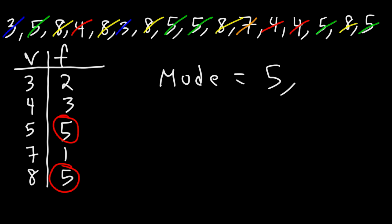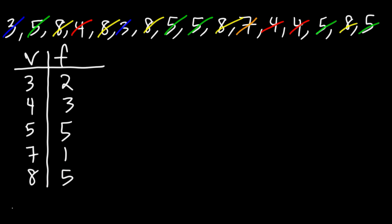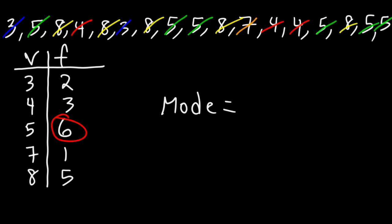Now let's say if we introduce another number — let's put another 5 here. So the range is not going to change. Now we have a total of 6 fives instead of 5 of them. So in this case, it's no longer a bimodal data set; it's a unimodal data set, meaning there's going to be one mode. Since now 5 has the highest frequency, the value 5 is the mode of the data set.